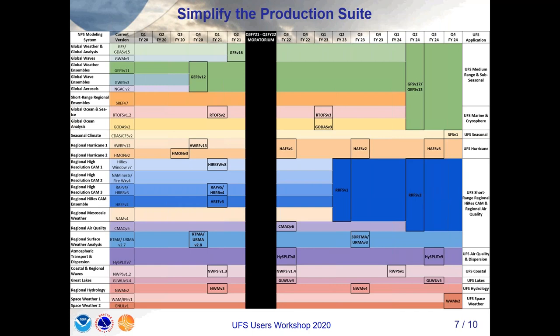This is what we call the rainbow diagram. The fact that we actually have a plan to simplify the production suite — on the left are just the major codes that are right in production right now. If we go to the right, you see the color bars becoming broader and fewer applications are in operations. We could go to less than 10 from 26. The fact that we actually have a plan for this and that we're actually making connections already, particularly on the global side, is going to be a massive simplification particularly of the regional side — and is proof that this is not just us talking, this is actually us going forward rapidly.